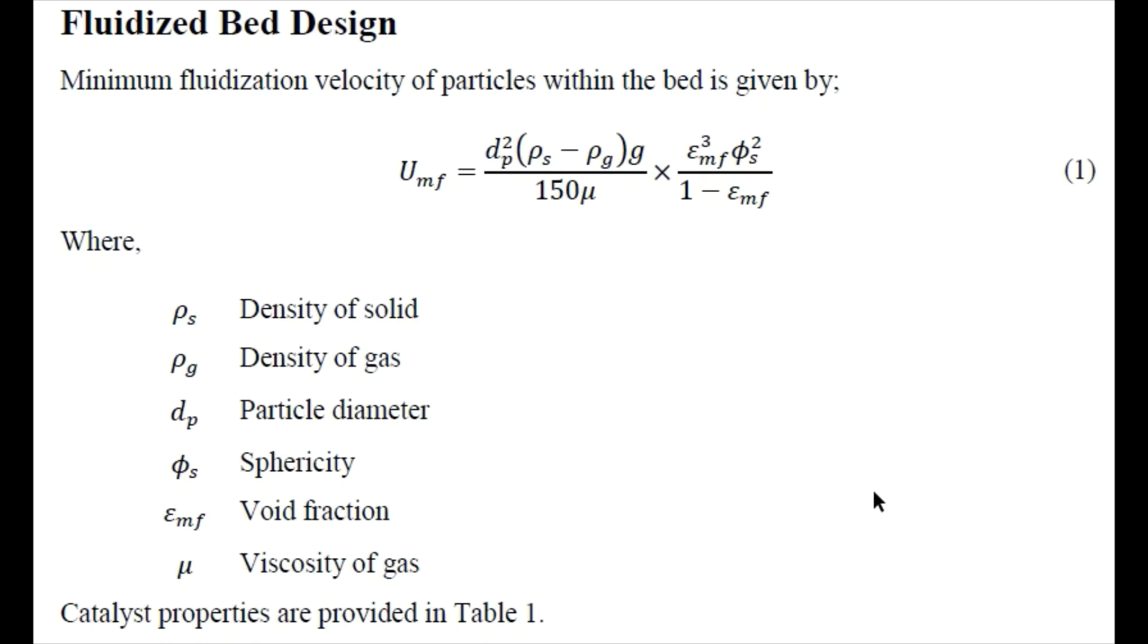In this video I am going to explain the design of fluidized bed reactor. First of all we need to find the minimum fluidization velocity, that is an important parameter. If we are giving the velocity less than this velocity to the gas stream then there won't be any fluidization in the bed and the bed will remain fixed. Let me first explain to you the different parameters involved in this equation.